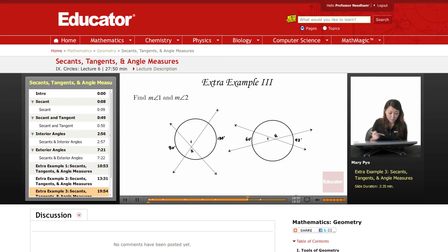The third example: find measure of angle 1 and measure of angle 2. So very similar, we have interior angles. Both of these are interior angles.